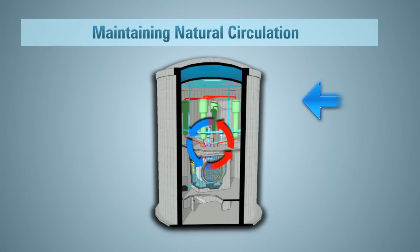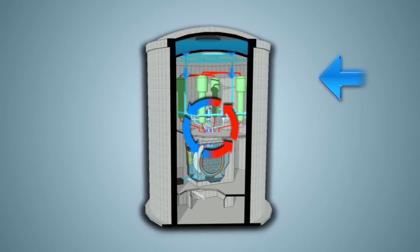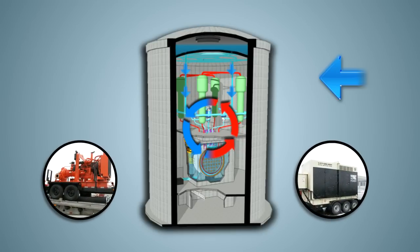Water is now being added by a gravity-driven system connected to a reserve water storage tank. This keeps enough water in the steam generator to maintain natural circulation. This also allows time for emergency mitigation equipment to be put in place.